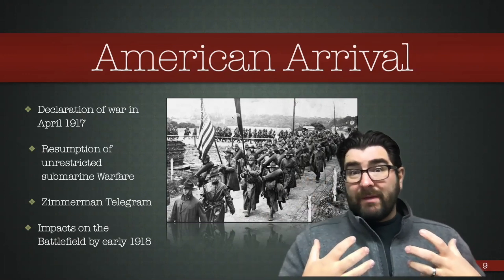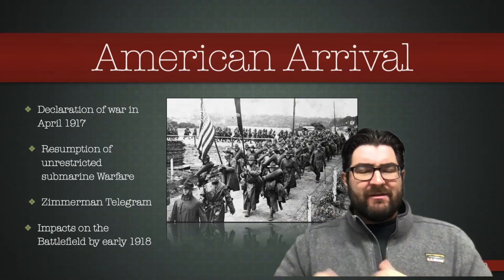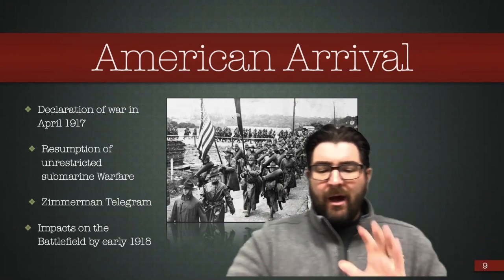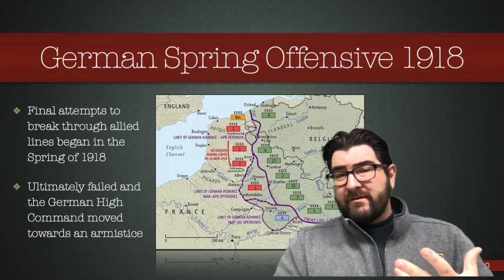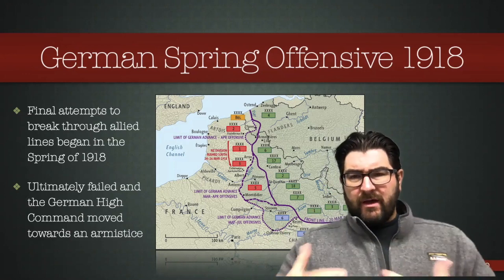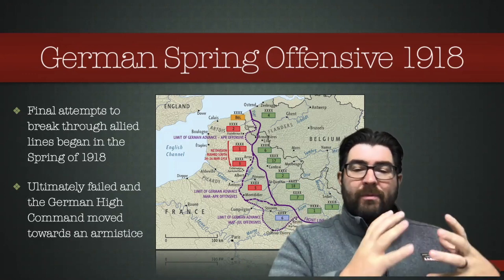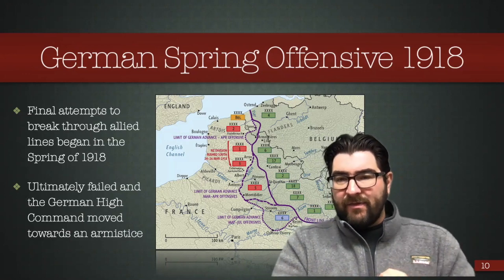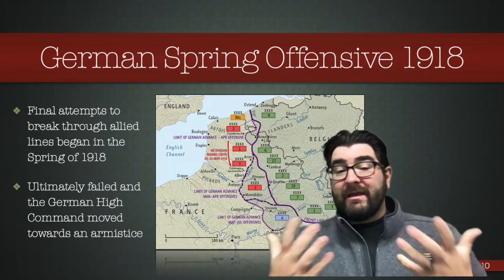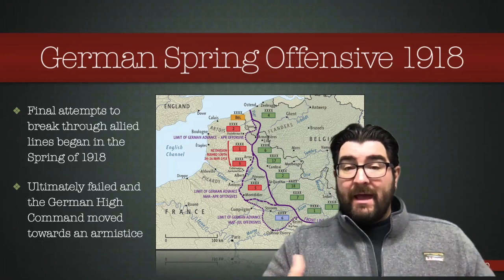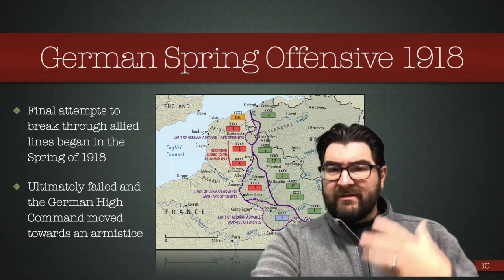The influx of new American soldiers into the Allied lines on the Western Front came at the same time Germany was throwing its last efforts into the war. Germany's last push, the Spring Offensive — also known as the Ludendorff Offensive — was their final hope to break through Allied lines and end the stalemate, throwing everything they had. Ultimately it was a failure, and the German High Command in the fall of 1918 moved to sign an armistice to end the conflict.